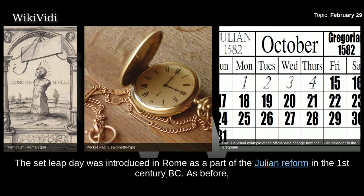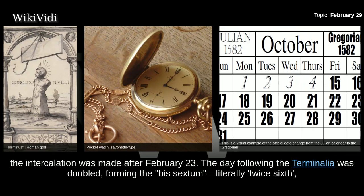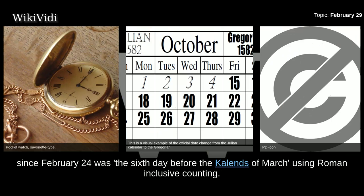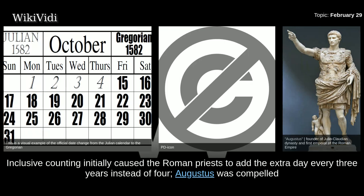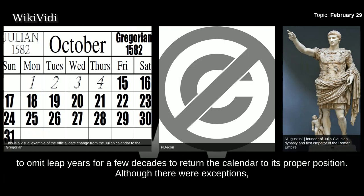The set leap day was introduced in Rome as part of the Julian Reform in the 1st century BC. As before, the intercalation was made after February 23rd. The day following the Terminalia was doubled, forming the bis sextum — literally 'twice sixth' — since February 24th was the sixth day before the calends of March using Roman inclusive counting. Inclusive counting initially caused the Roman priests to add the extra day every three years instead of four, and Augustus was compelled to omit leap years for a few decades to return the calendar to its proper position.